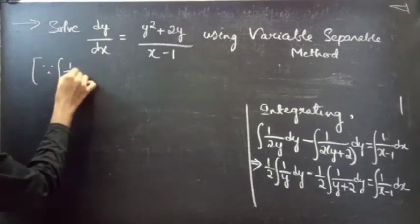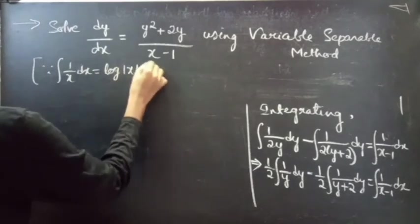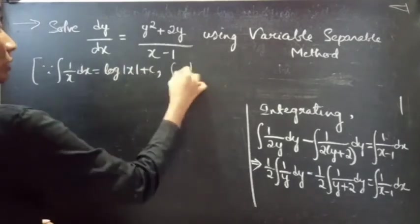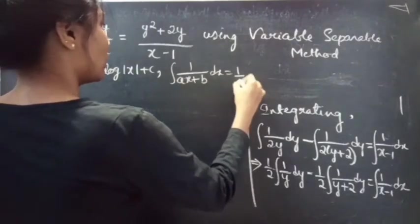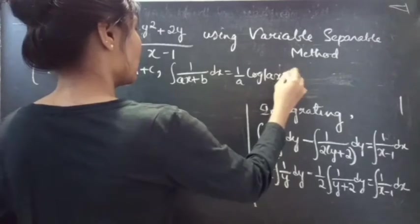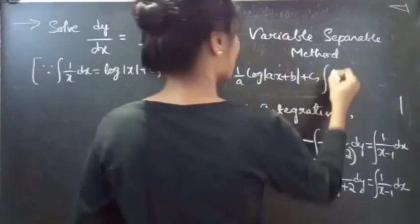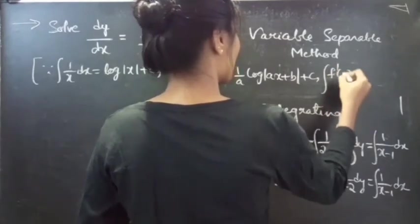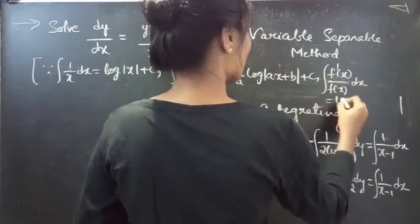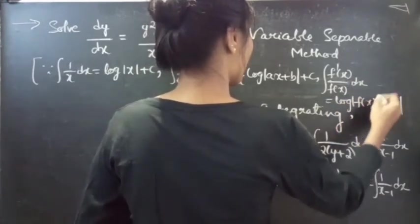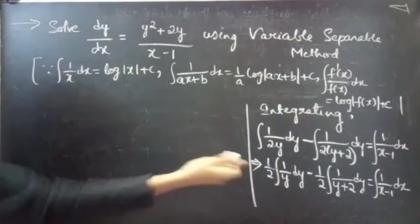We use the formulas: ∫(1/x) dx = log|x| + C, and ∫(1/(ax+b)) dx = (1/a) log|ax+b| + C, and also ∫(f'(x)/f(x)) dx = log|f(x)| + C.